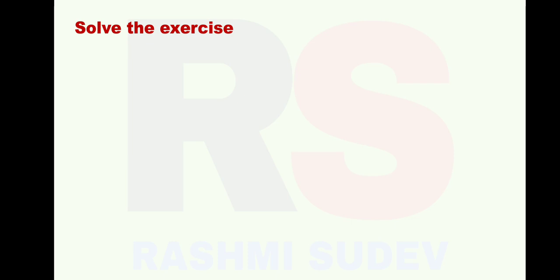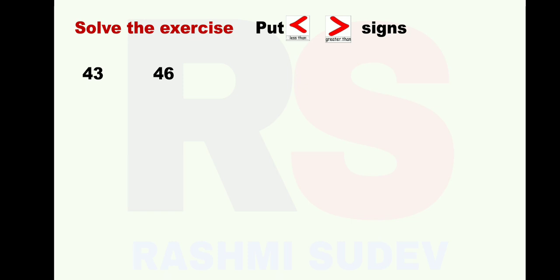Let us solve the exercise: Put less than and greater than signs. First sum: 43 and 46. Step by step - 43 is to the left hand side, 46 is to the right hand side. 43 is the smaller number and 46 is the bigger number. So we are going to put less than sign. We will read it as: 43 is less than 46.